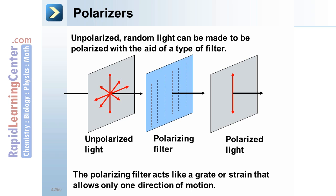However, once it goes through the picket fence, the slots which have a particular orientation allow only one direction of motion to pass through.